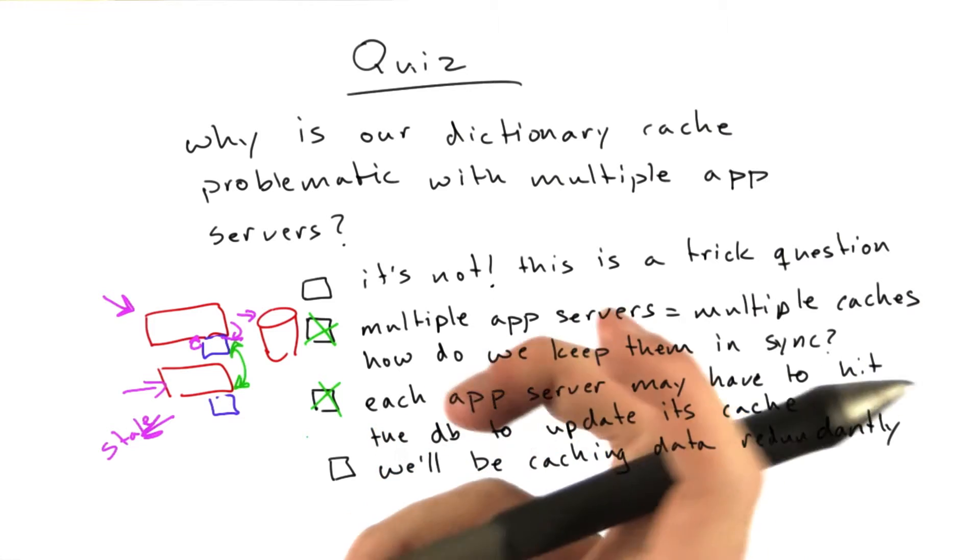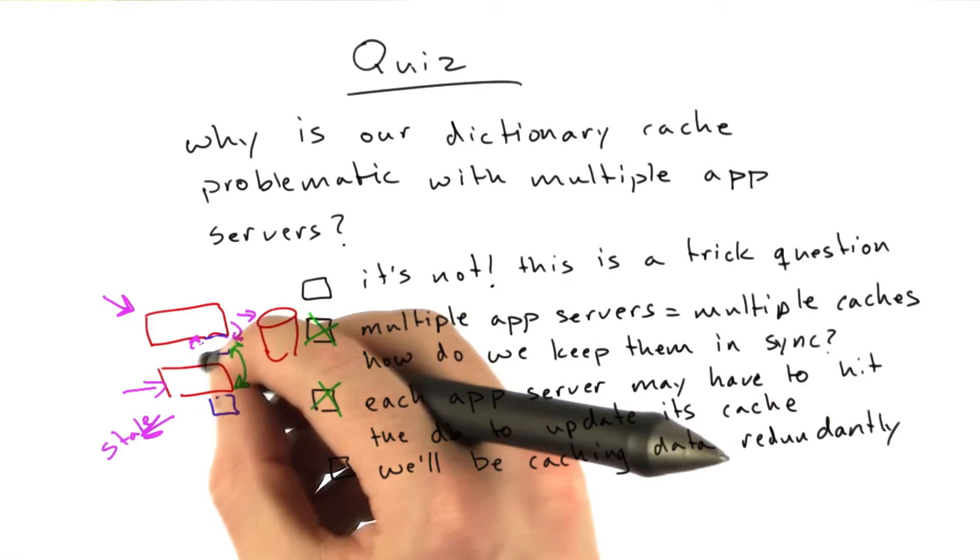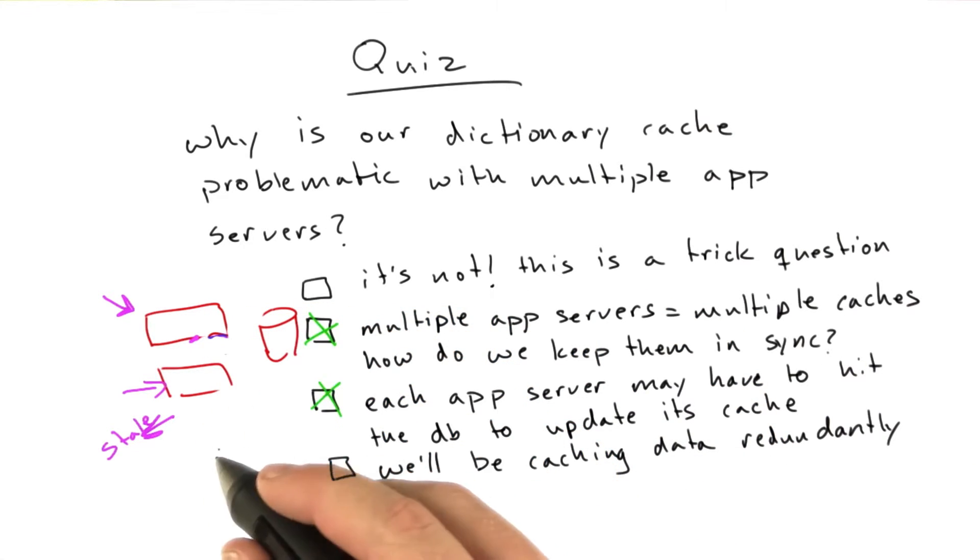Now, the solution we're going to approach here is going to change this architecture a little bit. Instead of each app server having its own cache, we're going to move caching into its own process.